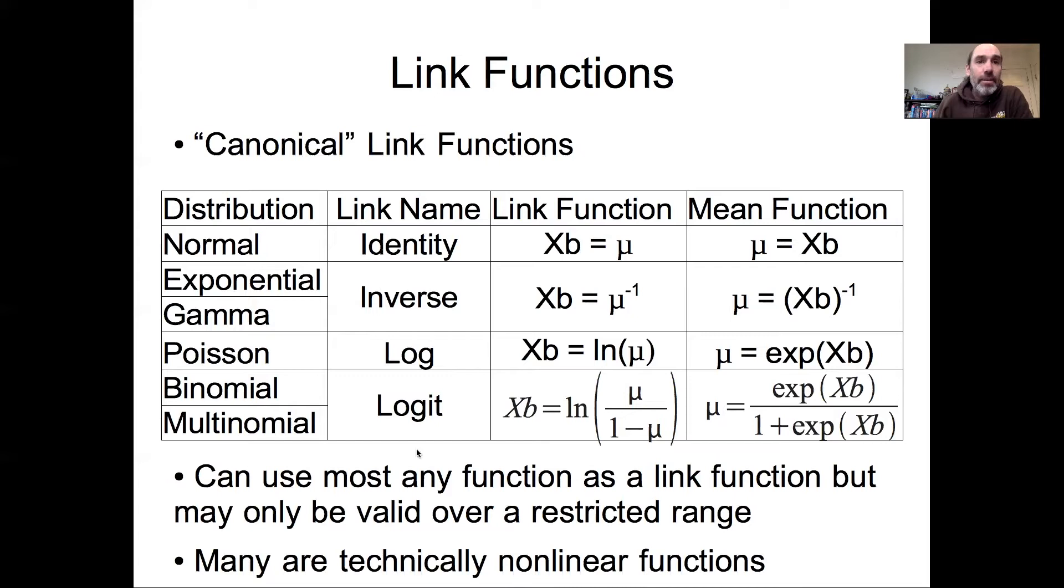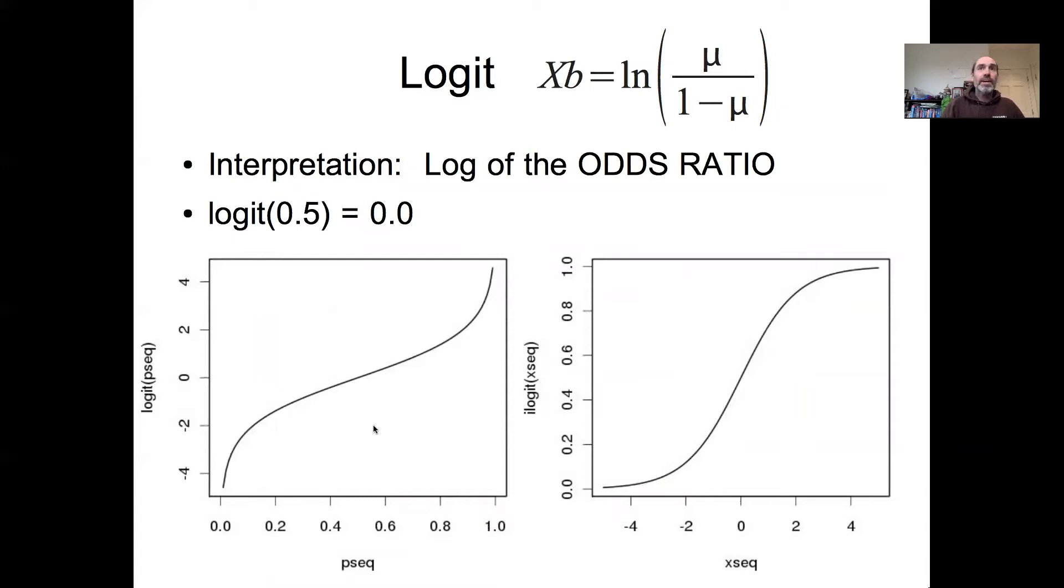An important case are the link functions for the binomial and multinomial models, which are based on the logit link. The logit link says that our linear model is related to the log of the mean over 1 minus the mean. The mean, because we're thinking about it in terms of a probability, for example in the binomial would be theta. This is essentially giving us the odds in favor of one event versus the other. So the logit is interpreted as the log of the odds.